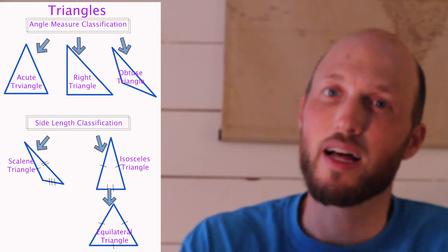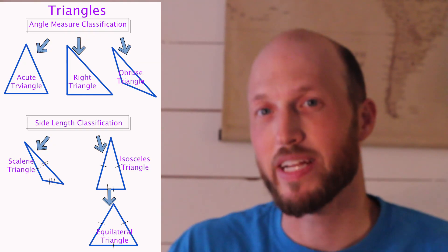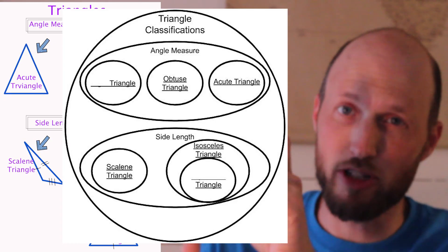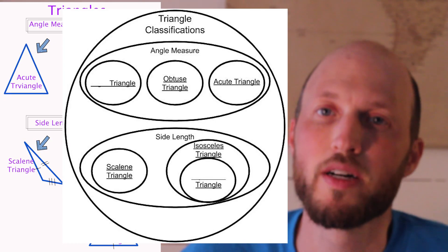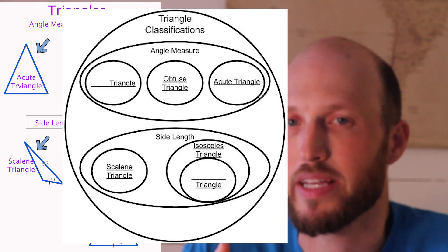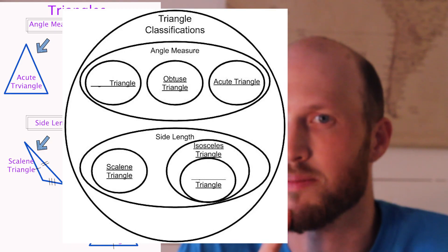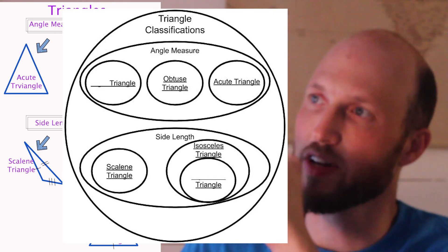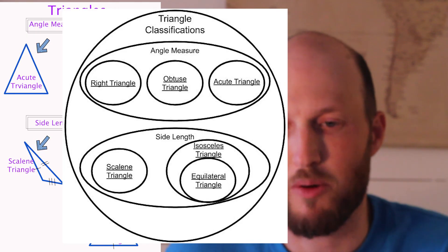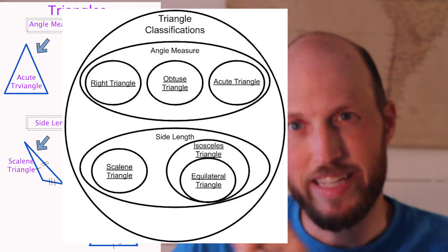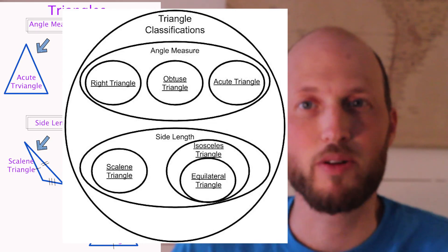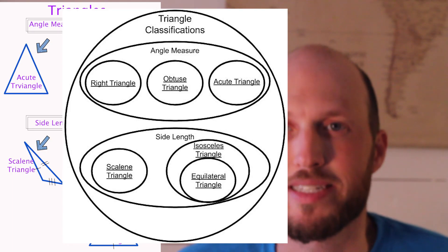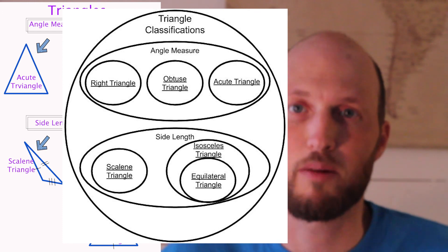One last thing — in another video on quadrilaterals, I talked about making a Venn diagram. I'm going to do the same thing. We have two diagrams here: one for angle measurements and one for side length. Fill in the blanks on those diagrams. On the angle measurement diagram you should have gotten right triangle. On the side length diagram, inside the isosceles circle there's another circle, and that one would be equilateral. This is another type of diagram you might see to classify a triangle.